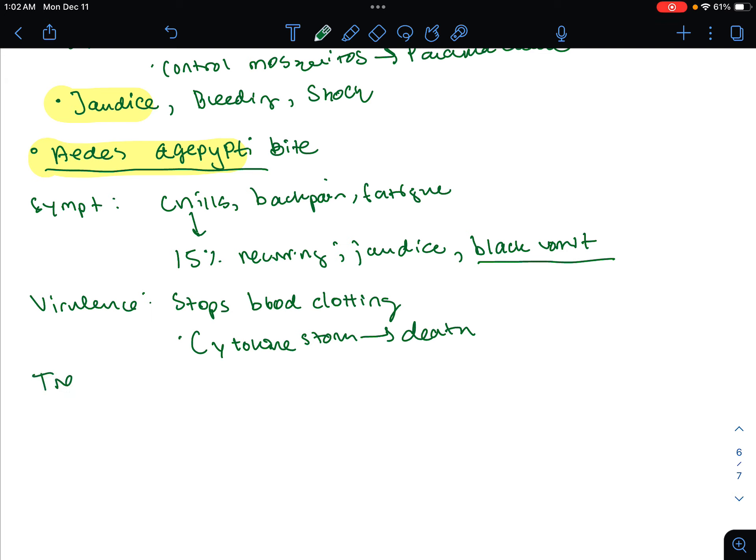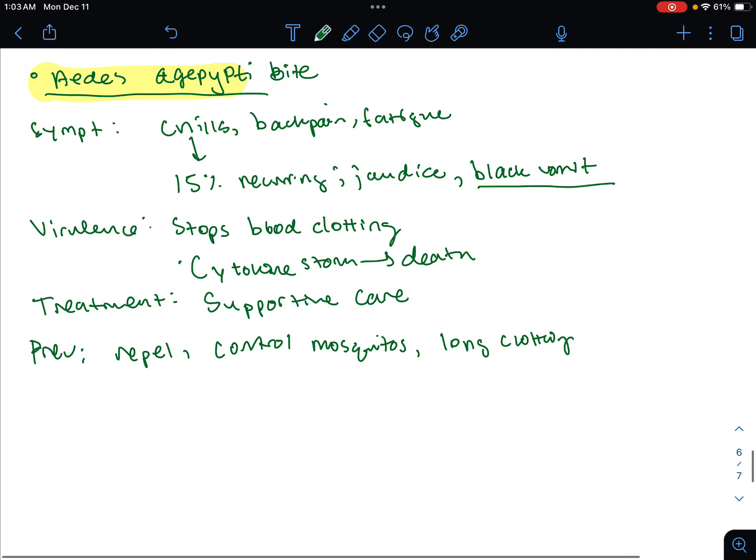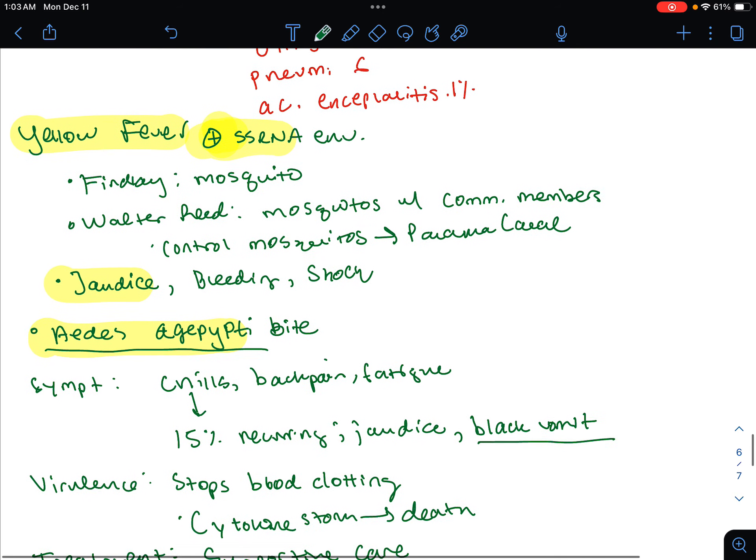15% of the cases will have the recurring fever as well as jaundice, bleeding from the mouth and eyes, and black vomit. That one is a very unique trait. The virulence is going to come from the stopping of blood clots and we're going to have the cytokine storm, and this is just going to kill the host. Treatment: the only thing listed here is supportive care. Prevention: you could use repellent, you could control the mosquitoes, long clothing, avoid being outside at peak biting times. We also have the live attenuated vaccine for yellow fever.